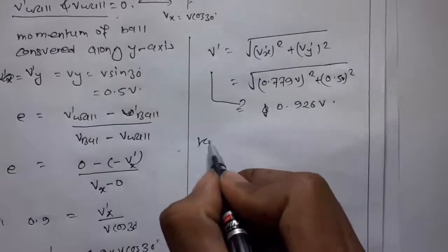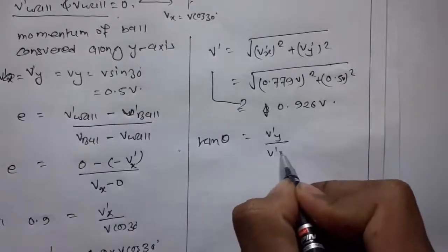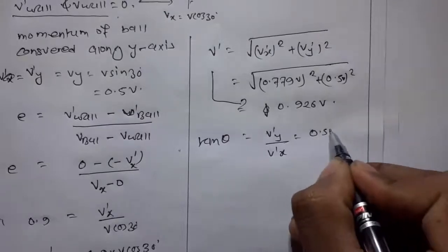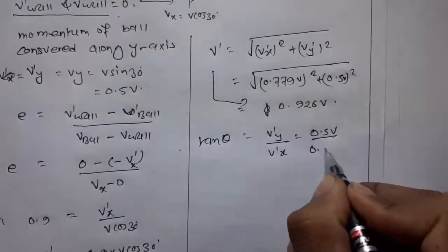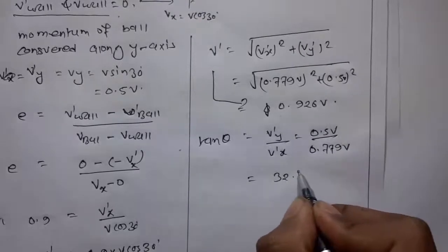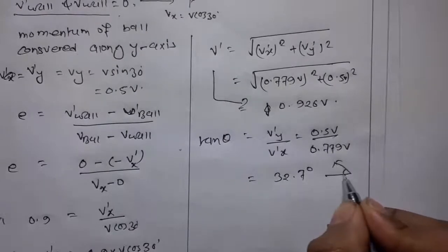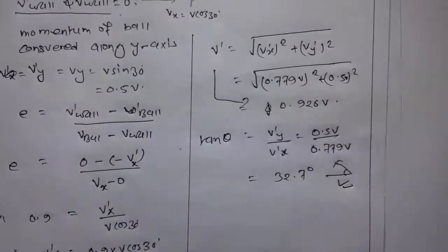And direction tan theta is equal to v dash y upon v dash x. This is 0.5 v upon 0.779 v, which is 32.7 degrees. This is the required answer.